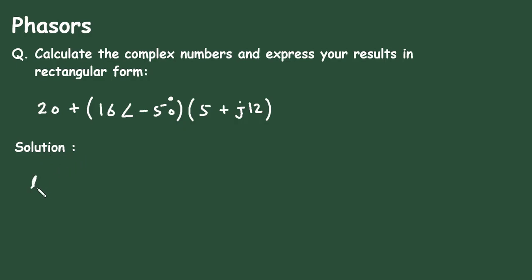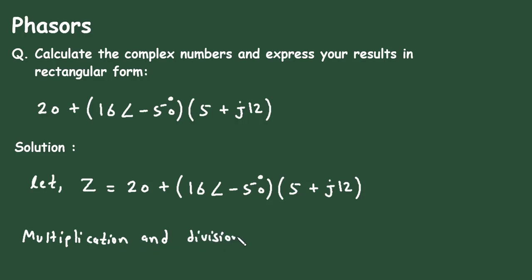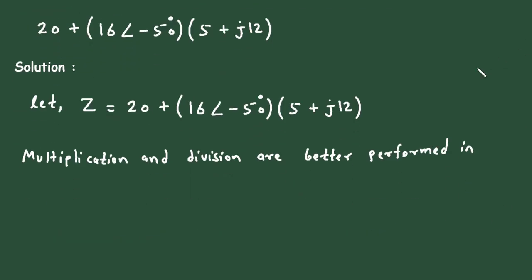Solution. Let z be the complex number equal to this value. Now, we know that here we have to perform multiplication and division, and we know that multiplication and division are better performed in polar form.